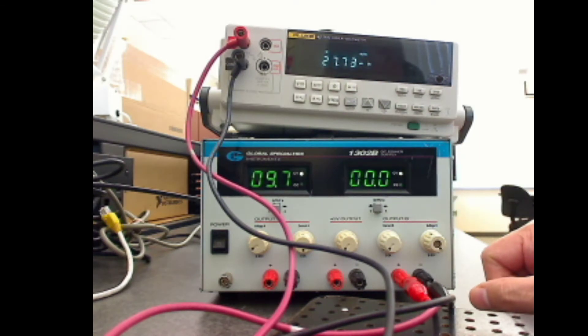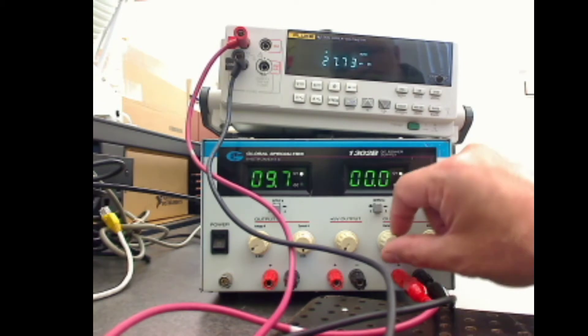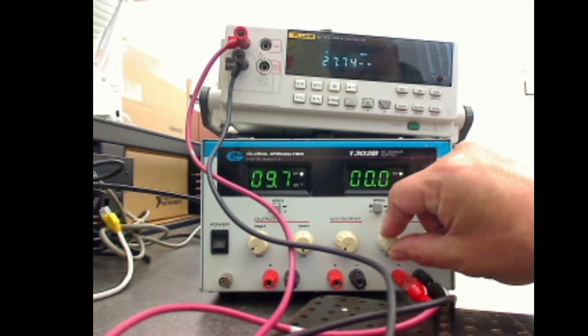Alright, that has current protection, overload protection, and that will prevent you from blowing a fuse or blowing a resistor or something if the circuit shorts out. So always make sure that you turn this knob all the way down.